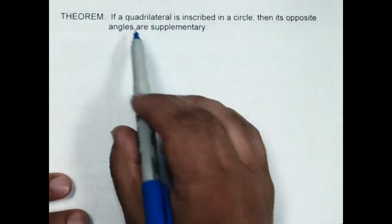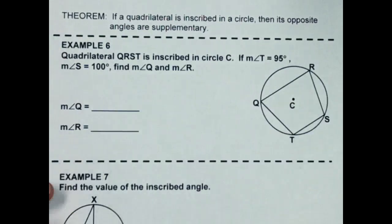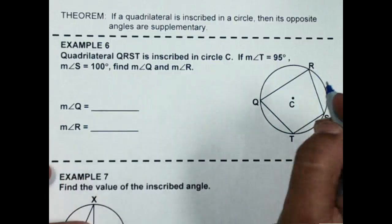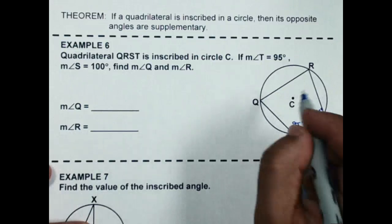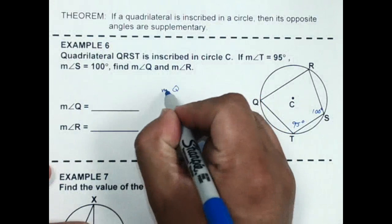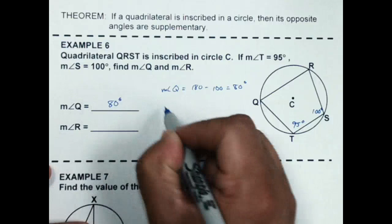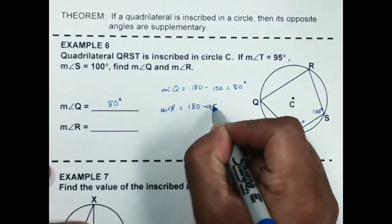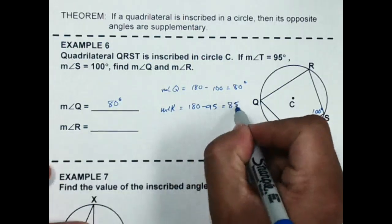The next theorem says that if a quadrilateral is inscribed in a circle, then its opposite angles are supplementary. In example 6, we have a quadrilateral inside a circle with angle T = 95 degrees and angle S = 100 degrees. The measure of angle Q is 180 − 100 = 80 degrees, and the measure of angle R is 180 − 95 = 85 degrees.